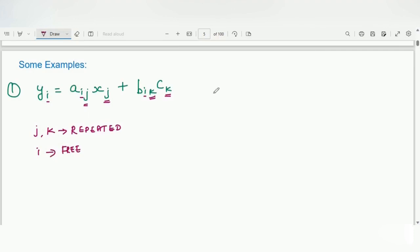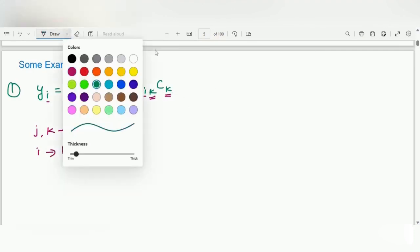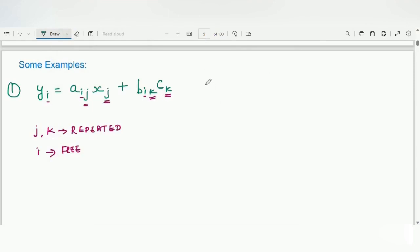i is a free index which means I can expand this and write it. First let us try to expand over the repeated index, and then we will go on with the free index. This means y_i is equal to a_i1 x_1 + a_i2 x_2 + a_i3 x_3 + b_i1 c_1 + b_i2 c_2 + b_i3 c_3.